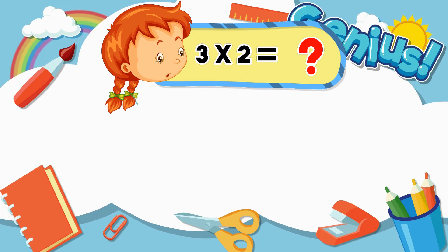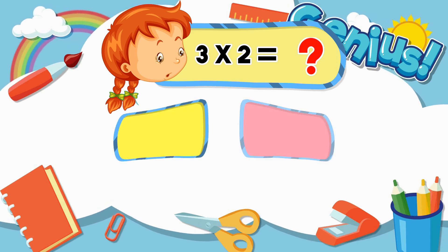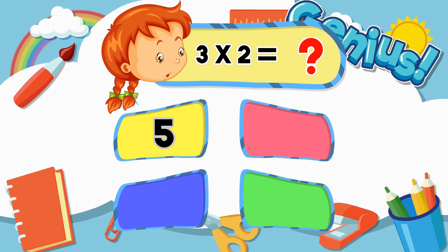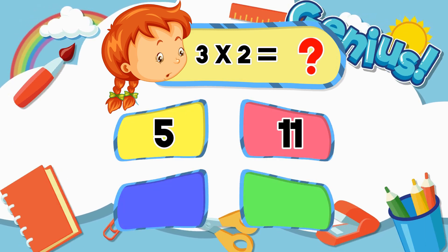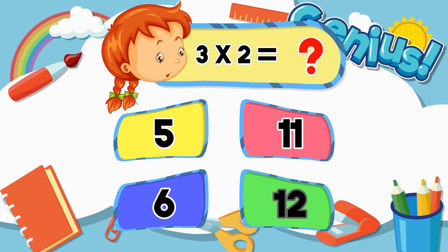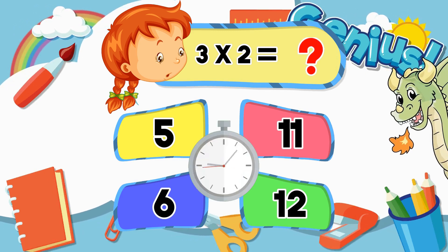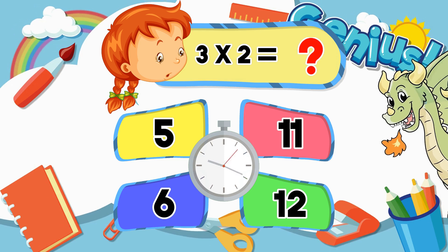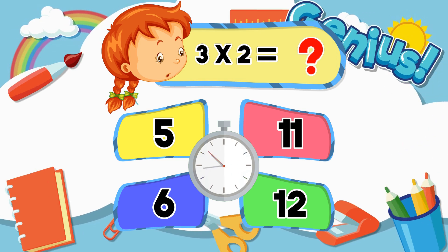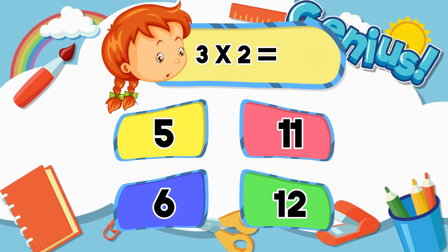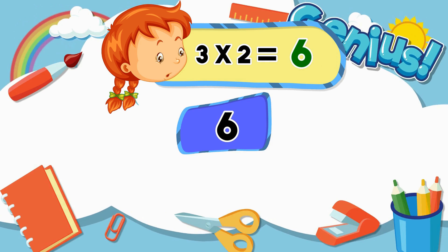What is three times two? Five. Eleven. Six. Twelve. Six.